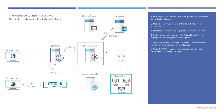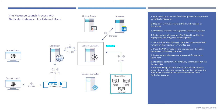Once the VDA is ready, it sends a session key to Delivery Controller. Delivery Controller passes the session information to StoreFront, and StoreFront contacts the Secure Ticket Authority (STA) on Delivery Controller to get a secure ticket. The reason for this is that since it's going to be for external users, without a secure ticket the identifiable server names and session information would be exposed. StoreFront contacts the STA on Delivery Controller, gets the secure ticket, and creates a launch file which has the session information with identifiable session info replaced. StoreFront passes the launch file to NetScaler Gateway, and NetScaler Gateway sends the launch file to Citrix Receiver on the endpoint device. Resource launch process for external users is complete.